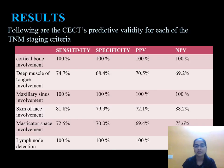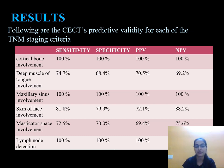The CCT predictive validity for each TNM staging criterion shows 100% positive predictive value in cortical bone involvement, maxillary sinus involvement, and lymph node detection. Approximately 70% positive predictive value was found in deep muscle of tongue involvement, 72% in skin of face involvement, and 69% in masticator space involvement.